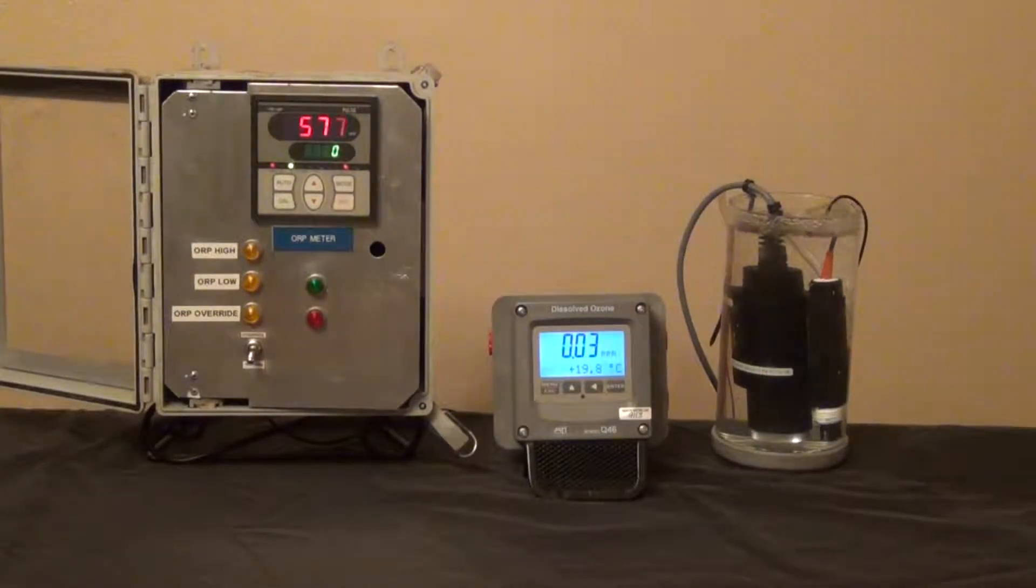The ozone generator has now been turned on. And what we'll see is the ORP levels will rise faster than the dissolved ozone levels. This is normal. The ORP meter simply has a faster response time than the dissolved ozone monitor.